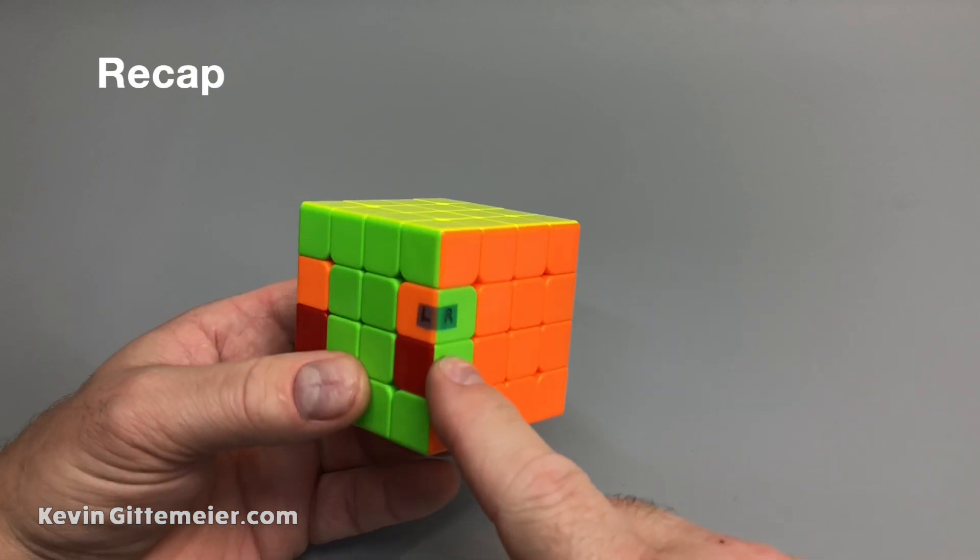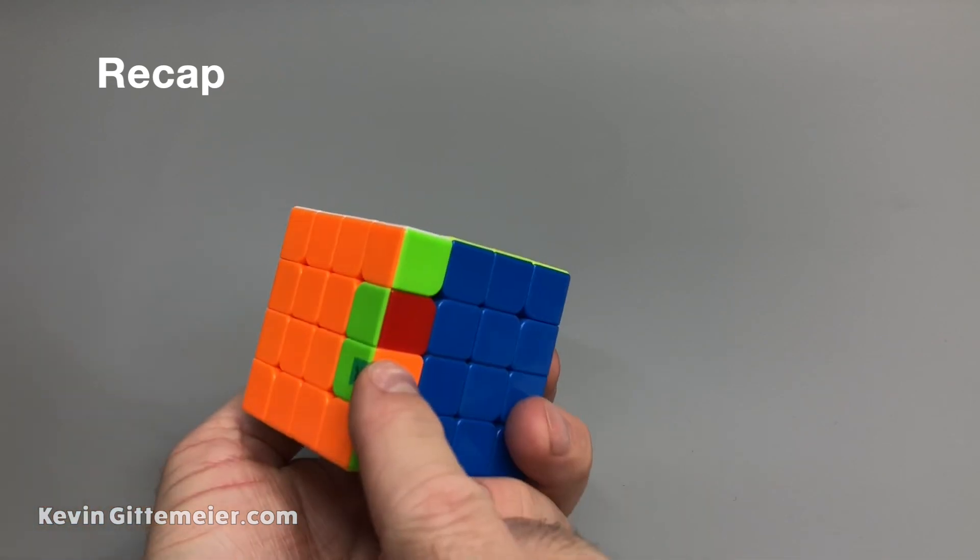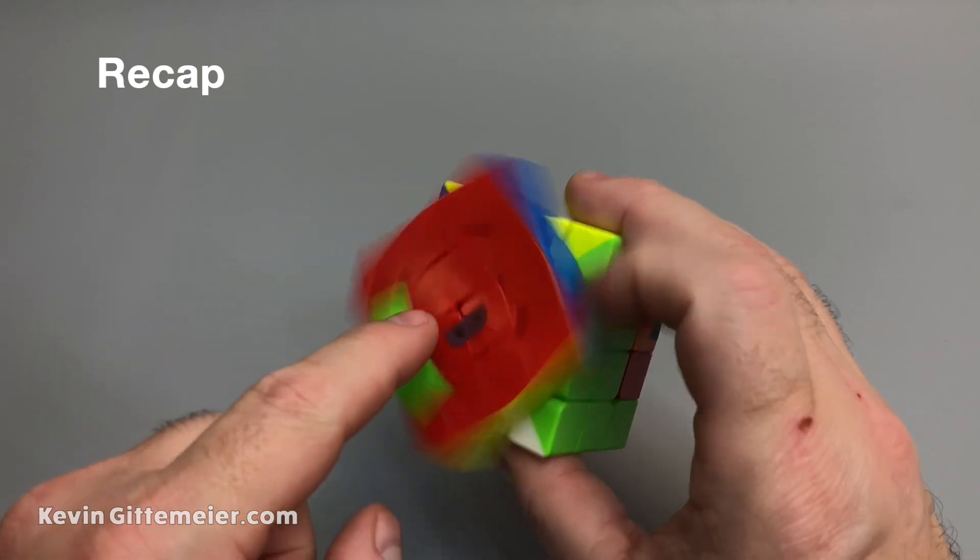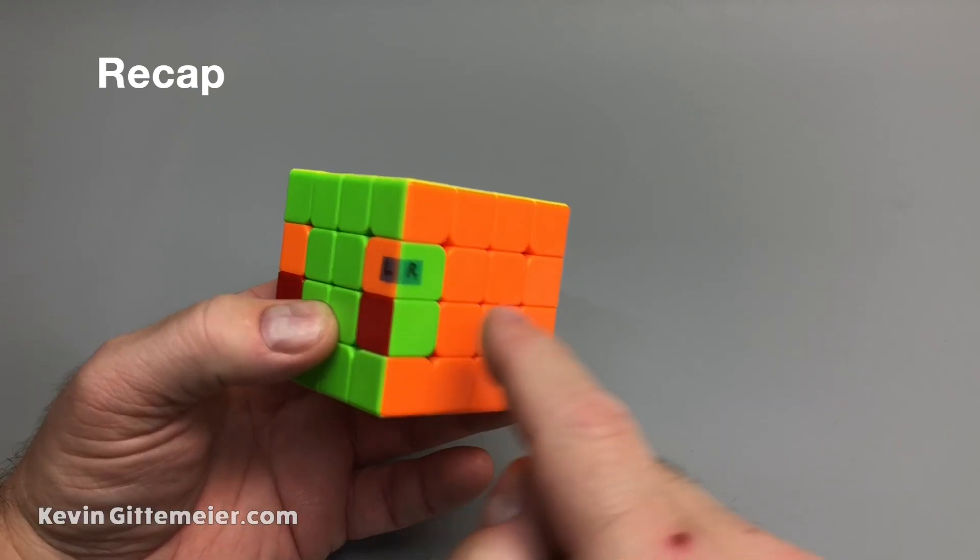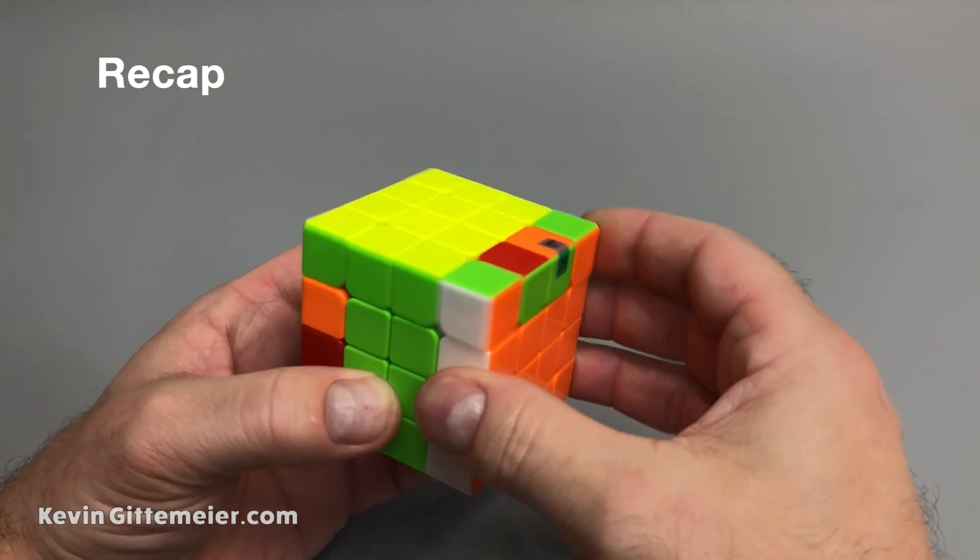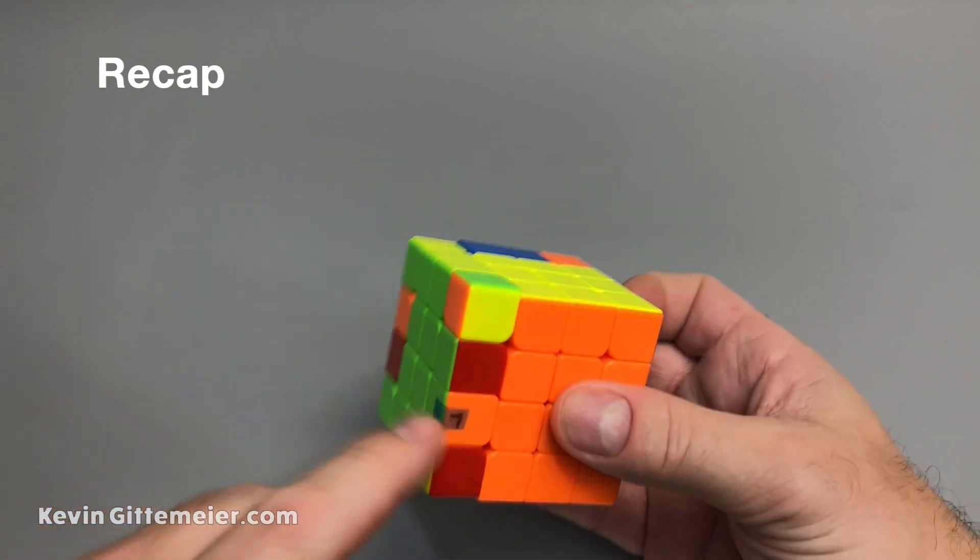All right, so to recap, the easiest way to flip edges is just turn one side. But the drawback to that is it also flips your centers. The easiest way to flip them independent of the centers is just beginner method of take the edge out, put it back in upside down.